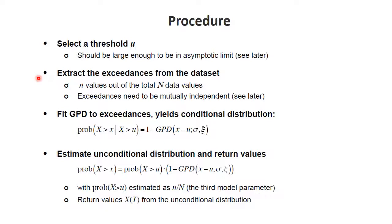What's the estimation procedure? It's quite simple. First, select a threshold Q large enough — we'll have to worry about that, because if you go too low, things break down. We'll discuss what good thresholds to choose are. Then you extract the exceedances from the data set — for example, you have n values out of the big N. Then we fit the GPD to the exceedance data, which yields this conditional distribution as a function of u. We also want the probability that x is larger than some value x for the entire population — the unconditional distribution — by multiplying by the marginal. From this, we can calculate return values using the fitted GPD distribution.